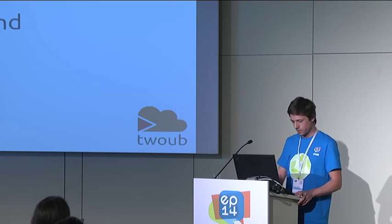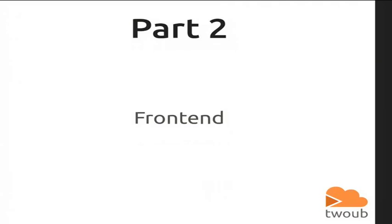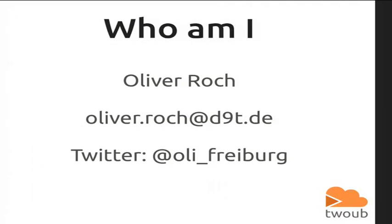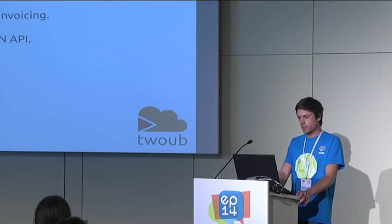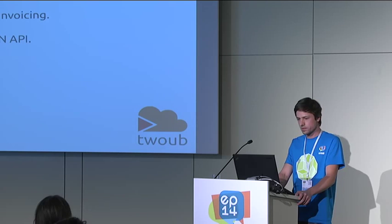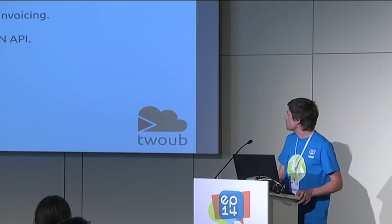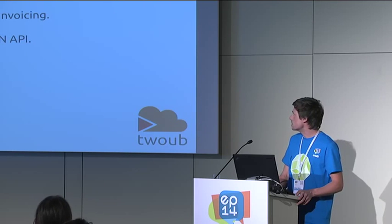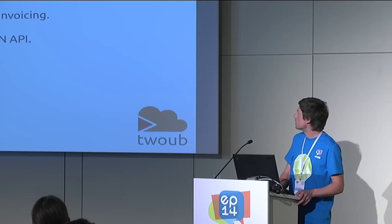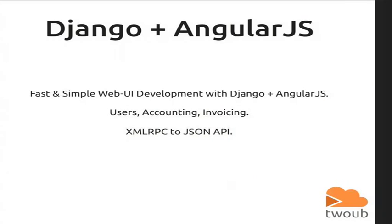Hi. I'm working on the front-end of 2WOOP. My name is Oliver Rock. I chose Django and AngularJS to get the web UI started pretty quickly. I use Django for user accounting and invoicing management, and as a mediator from Daniel's XMLRPC API to a JSON API that I can consume with AngularJS.